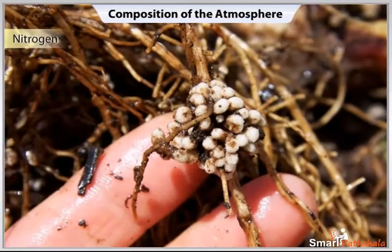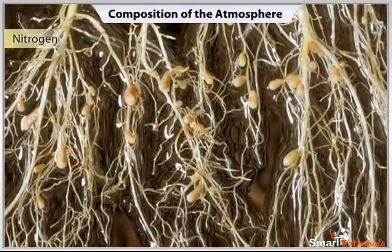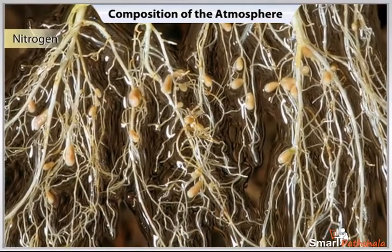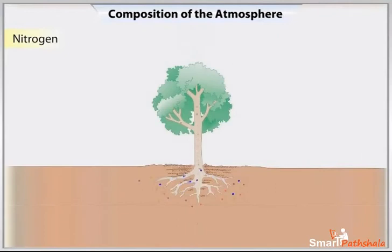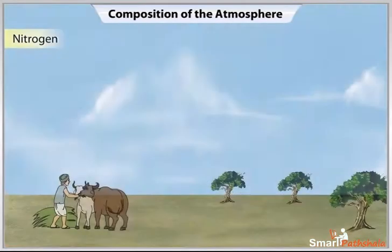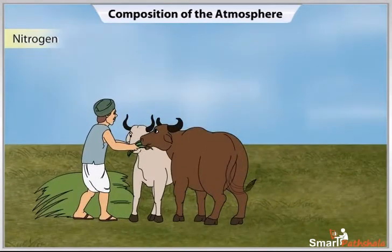Bacteria that live in the soil and roots of some plants take Nitrogen from the air and change its form so that plants can use it. Plants are also able to assimilate Nitrogen directly in the form of Nitrogen compounds that may be present in the soil. Animals get Nitrogen-containing compounds by eating plant proteins.